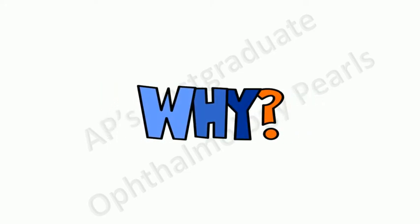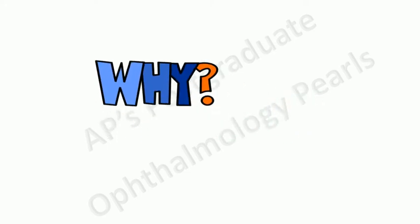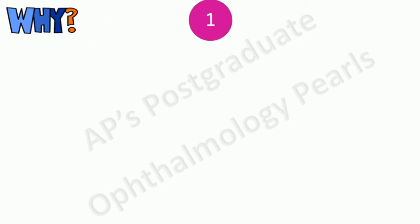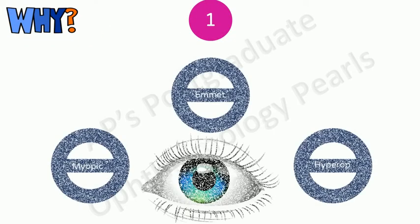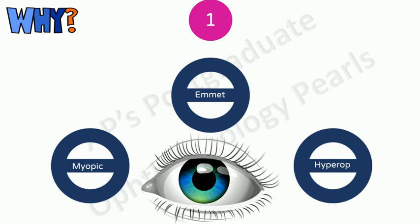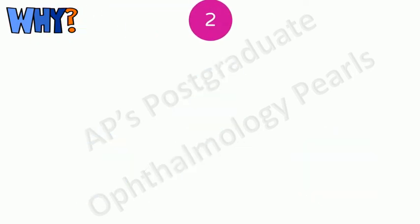Now we come to the uses of spherical equivalent. First it tells us whether the eye is essentially myopic, emmetropic or hypermetropic. This is especially important when choosing monofocal IOLs in certain cases.